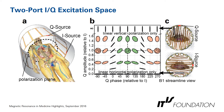The two-port IQ excitation space is illustrated here. The I and Q sources on the birdcage each result in one linear polarization: the Q source results in vertical polarization of the B1 field, and the I source in horizontal polarization. If the I and Q have the same amplitude with a 90-degree phase shift, we end up with circular polarization. If we change the relative amplitude or the relative phase, we get elliptical or linear polarizations with different polarization angles.